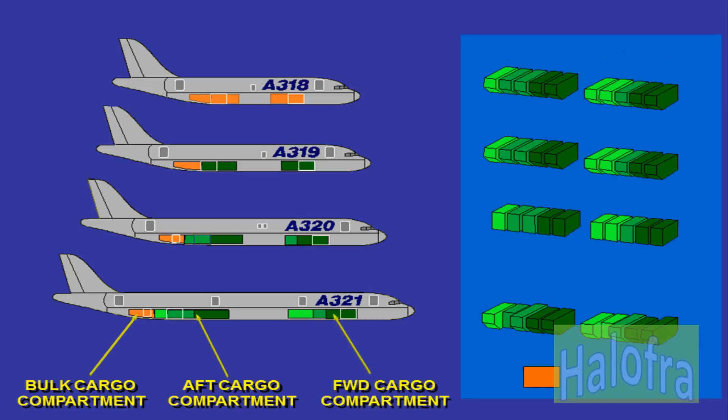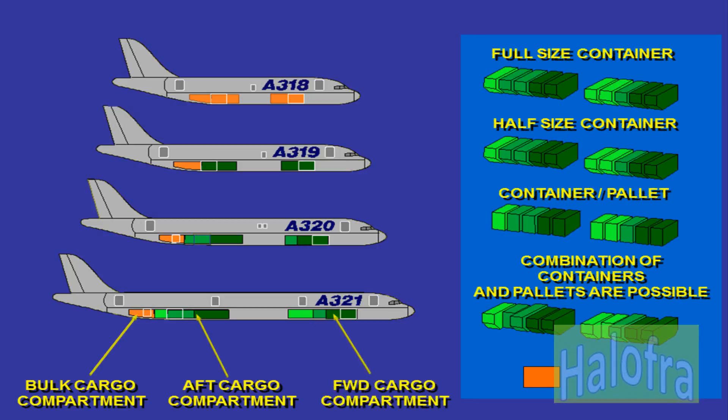The cargo compartments can be loaded with different types of containers: full size container, half size container, or pallet. On the A318, only bulk cargo compartments are available.